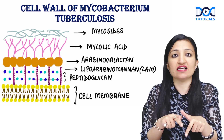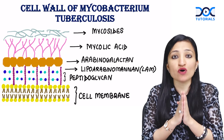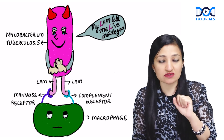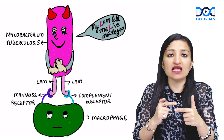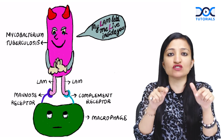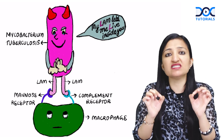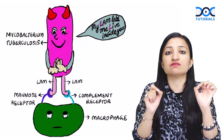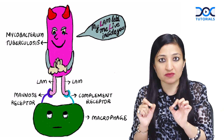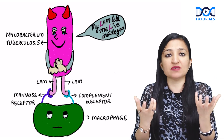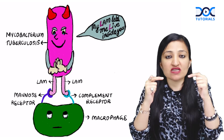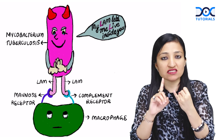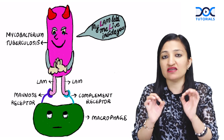Now in this entire diagram let me focus a little more on lipoarabinomannan. Lipoarabinomannan, or LAM, is important for two reasons. Reason number one is it is going to help in the internalization of this organism into the macrophages. This happens because macrophages have got receptors decorated on their surface known as mannose receptors and complement receptors. Both these types of receptors can bind to LAM, so LAM is going to gain entry inside the macrophage by binding to these receptors.